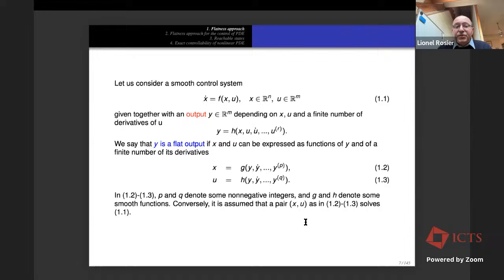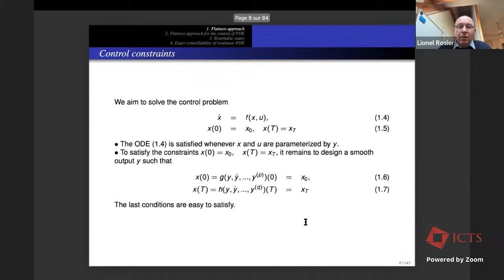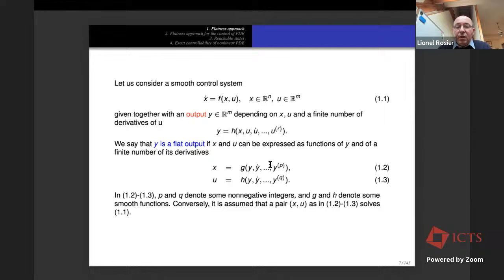If y is a flat output, the control problem is very easy to solve in practice. Given the ODE x-dot = f(x, u) with initial condition x(0) = x_0 and terminal condition x(T) = x_T, you can forget about the ODE itself because if x and u are expressed via the output, the ODE is automatically satisfied.